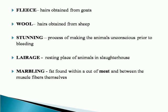Fleece refers to hairs obtained from goats. Wool refers to hairs obtained from sheep. Stunning is the process of making animals unconscious prior to bleeding and slaughtering.